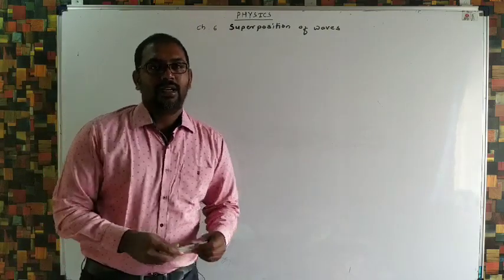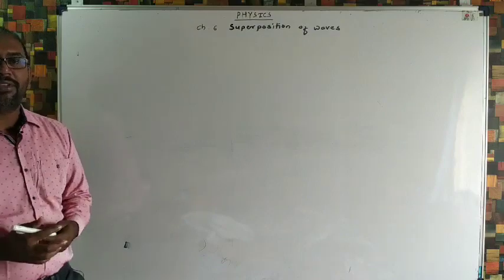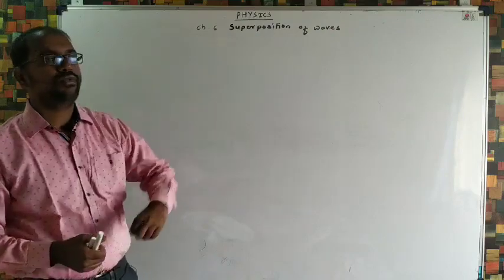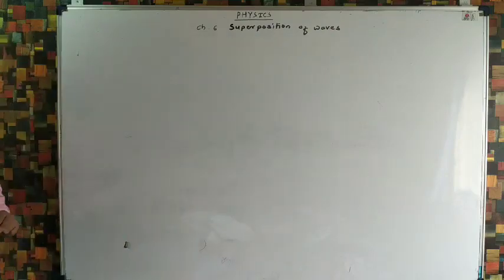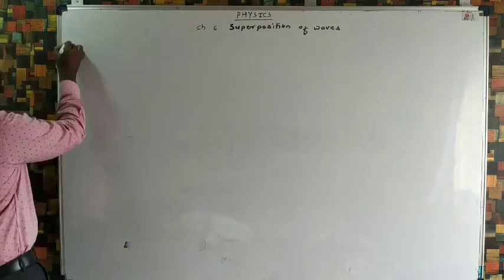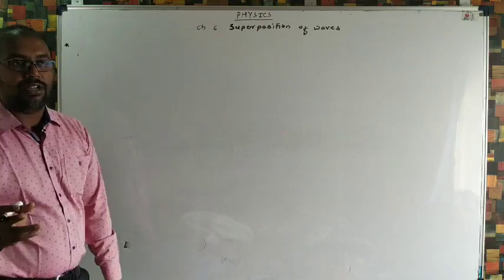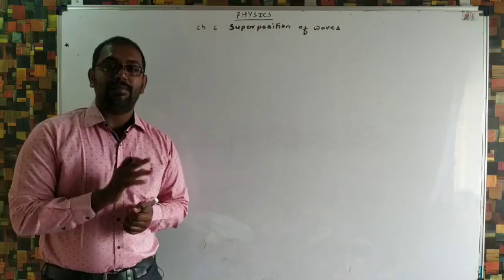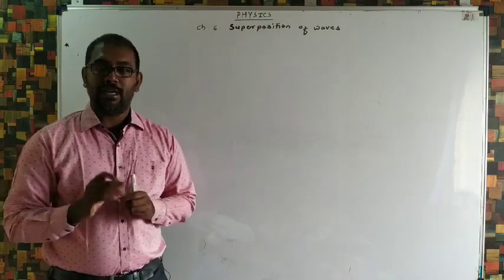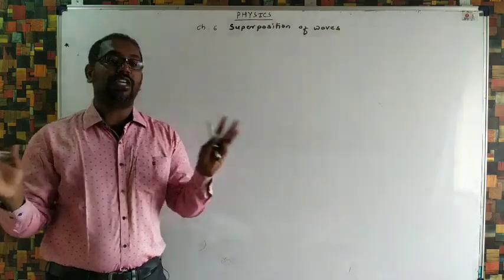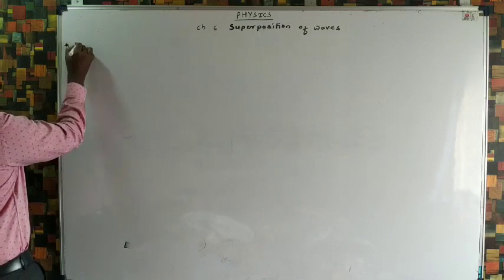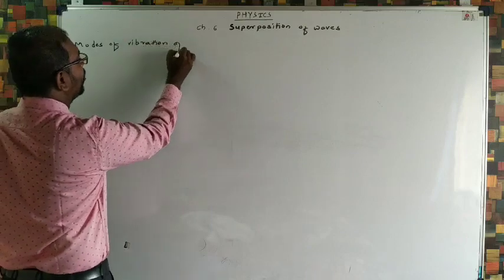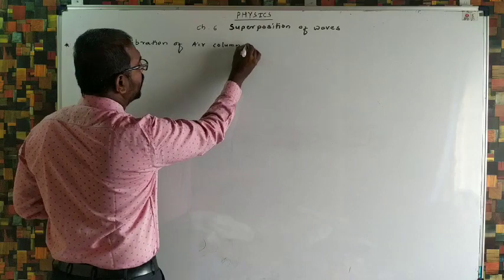Hello everyone. In today's lecture we have to start one article from physics chapter number six of 12th standard syllabus — superposition of waves. We have to start the article: modes of vibration of air column. In that, two cases are there: case number one, modes of vibration of air column in a pipe open at one end and closed at one end, and the second one is open at both ends.